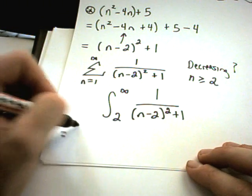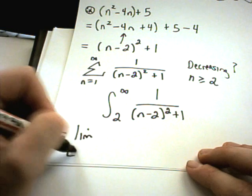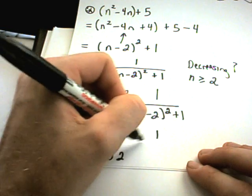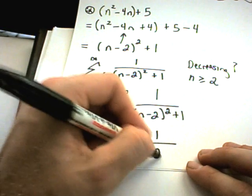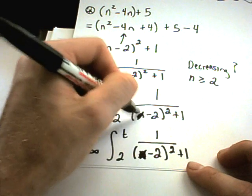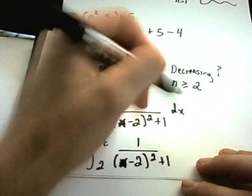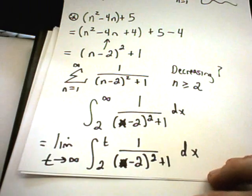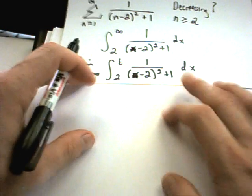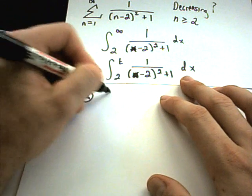Alright, so I'm going to rewrite this problem. The limit as t goes to infinity from 2 to t of 1 over n minus 2 squared plus 1. I guess I'll replace my n's with x's here. dx. And now I have to integrate this thing. So again, kind of the same way I did the other one, I'm just going to think about the improper integral.